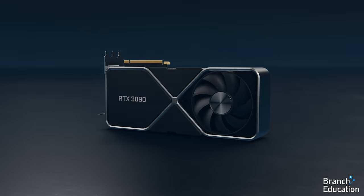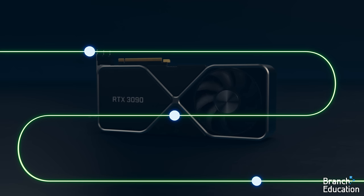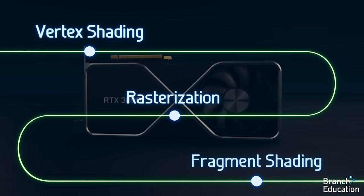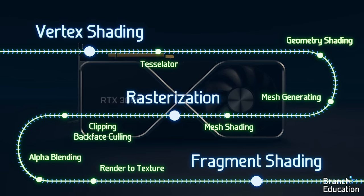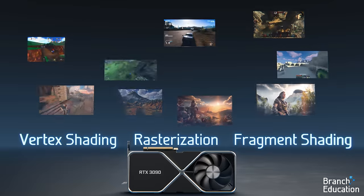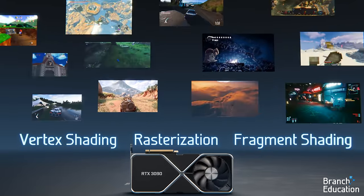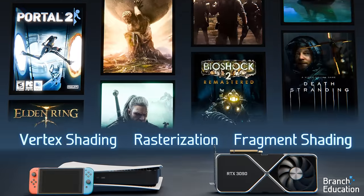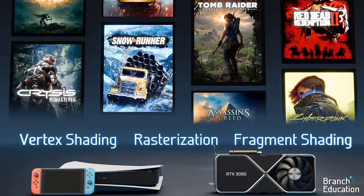The video game graphics rendering pipeline has three key steps: vertex shading, rasterization, and fragment shading. While additional steps are used in many modern video games, these three core steps have been used for decades and thousands of video games for both computers and consoles, and are still the backbone of the video game graphics algorithm for pretty much every game you play.